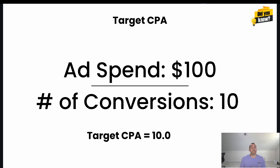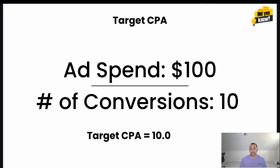If your historical data shows you've been achieving a CPA of $10 and you're happy with that, you could simply set your target CPA to $10. But if you want to drive better performance, you would decrease your target CPA — for example, from $10 down to $9 or $8 — and see if Google is able to achieve that performance target.